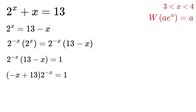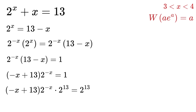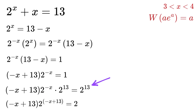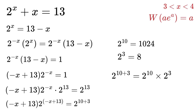So now let us try to use this W function on the left side. For that, multiply both sides by 2 raised to the power 13. We will use a power rule which says that a raised to m times a raised to n equals a raised to power m plus n. Using this, we get minus x plus 13, multiplied by 2 raised to the power minus x plus 13. On the right-hand side, we can write 13 as 10 plus 3, giving us 2 raised to 10 plus 3. Since 2 raised to 10 is 1024 and 2 raised to 3 is 8, this becomes 1024 times 8, or 8192.